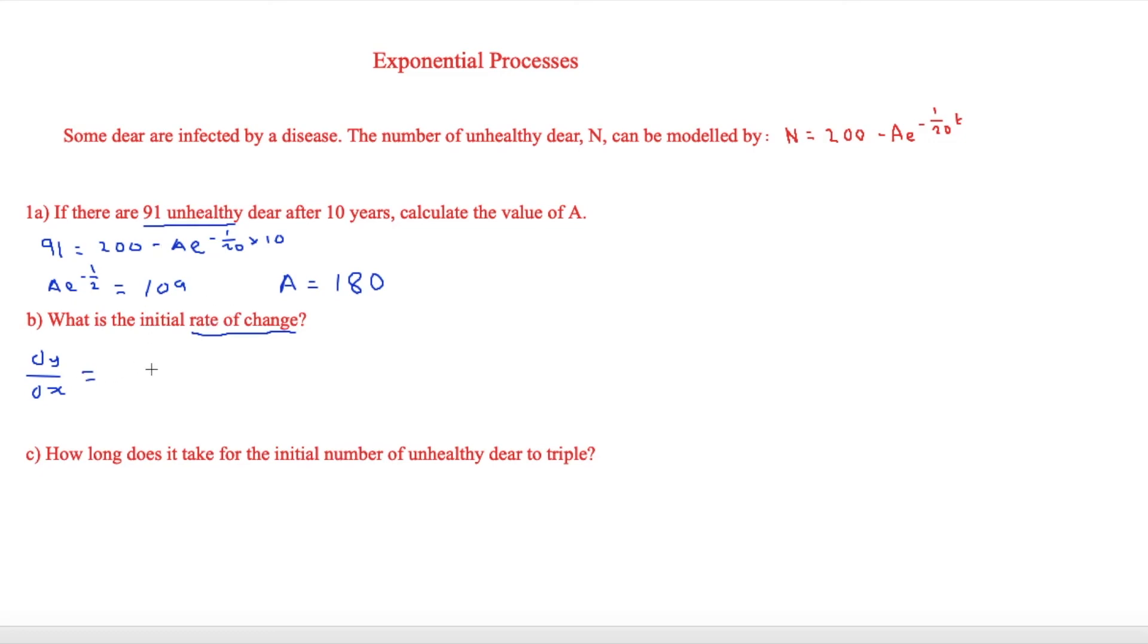Then it's going to be 9e to the minus 1 over 20t. Now, again, this is the next part. We've got to look at the initial. Initial means right at the start, therefore t will equal 0. So therefore the rate of change will just be 9 deer per year.